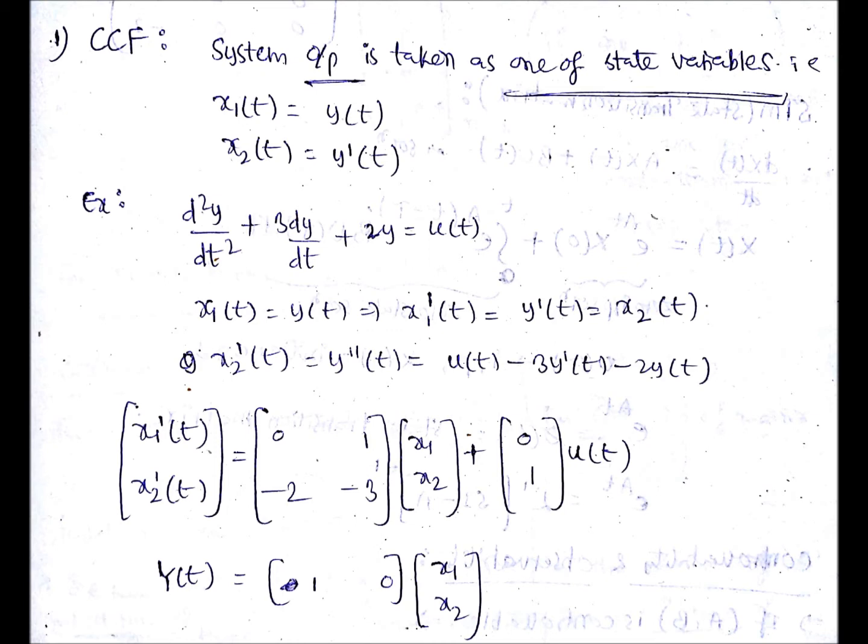That is x₁'(t), x₂'(t) equals [0 1; -2 -3] (the state matrix) and B will be [0; 1] into u(t), and y(t) will be [1 0][x₁; x₂]. Here y(t) is in this form always - any one state variable will be 1.